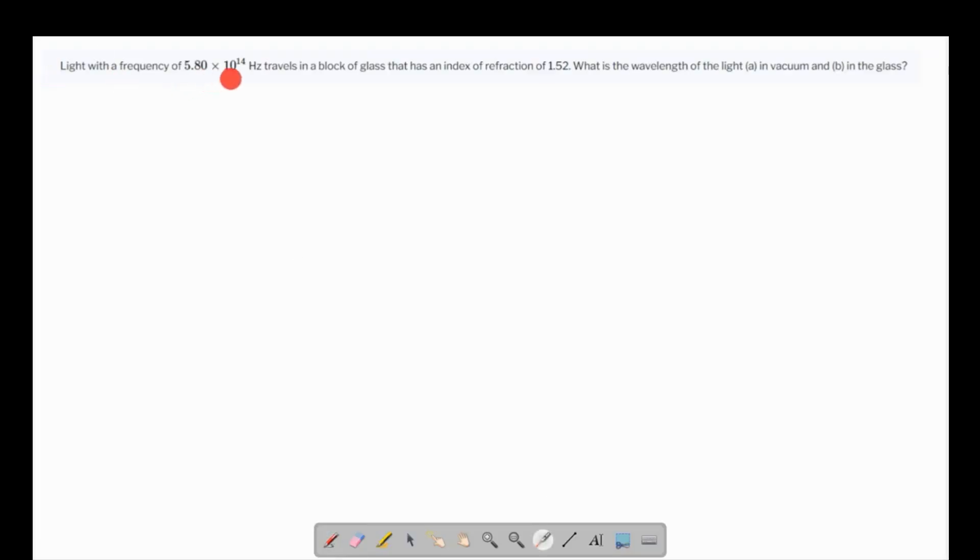We are given that light with a frequency of 5.8 times 10^14 Hz travels in a block of glass that has an index of refraction of 1.52. So what is the wavelength of the light in vacuum and in the glass?